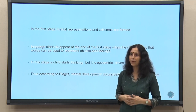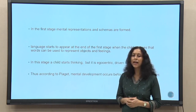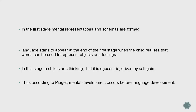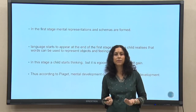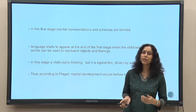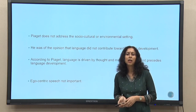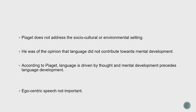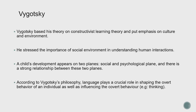Till then it was a pre-linguistic, pre-verbal stage — only schematic representation. From age 2 onward that representation gets a voice and a label in terms of language; language now represents the very schematic understanding the child was already creating. Thought in this case precedes language as far as Piaget is concerned. In this stage, a child starts thinking but the thought is egocentric, driven by self-gain. According to Piaget, mental development occurs before language development, and he does not highlight the socio-cultural and environmental setting too much.